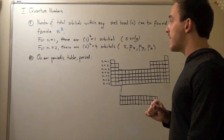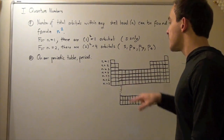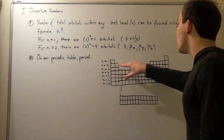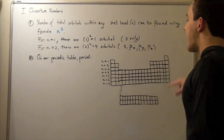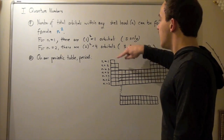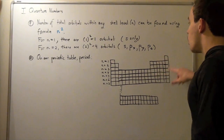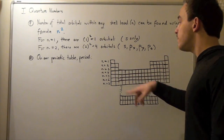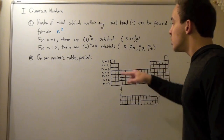One last thing: looking at the periodic table, each period represents a new energy level or shell level. In period 1, all elements have a shell level of N equals 1. In period 2, all elements have a shell level of N equals 2. In period 3, all elements have a shell level of N equals 3, and so on — each row represents a new energy level.